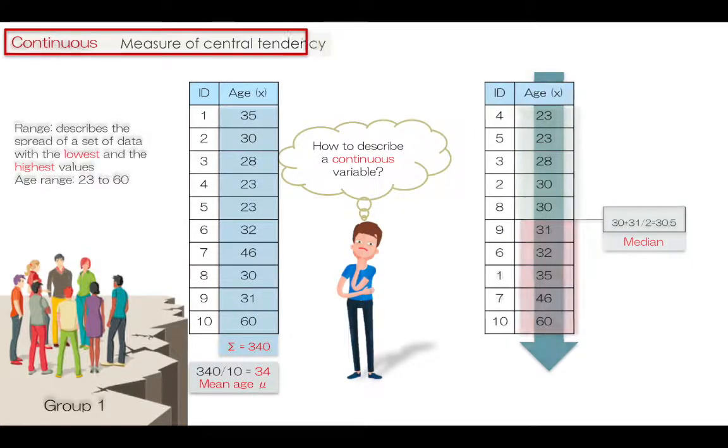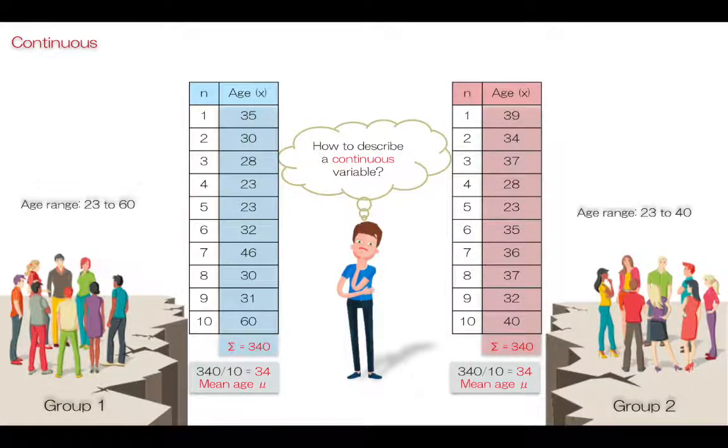But what if two different groups have the same mean value? Does it mean that they are the same? It seems we need more mathematical measurements.